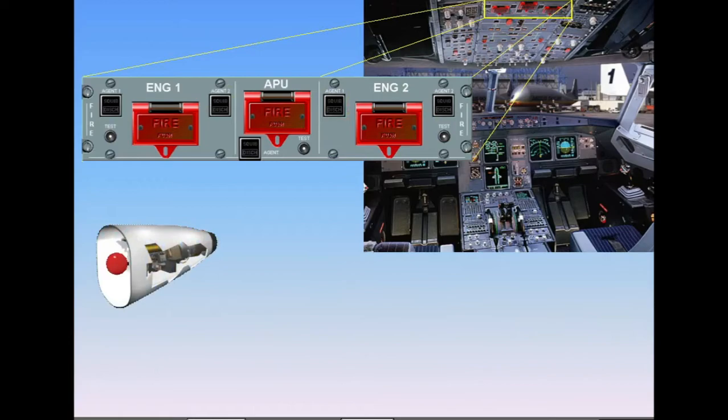For the APU, there is just one fire extinguisher bottle and only one discharge button.